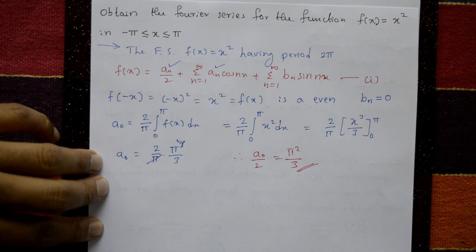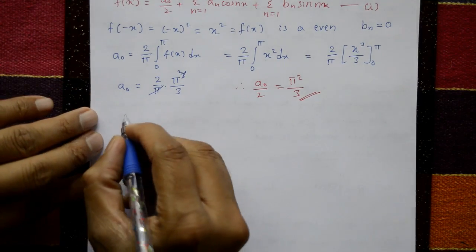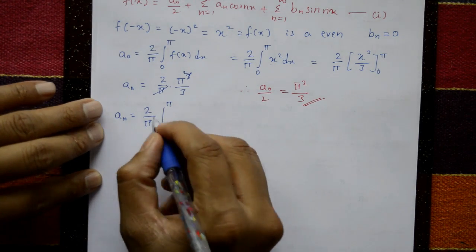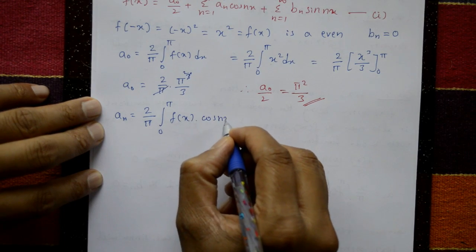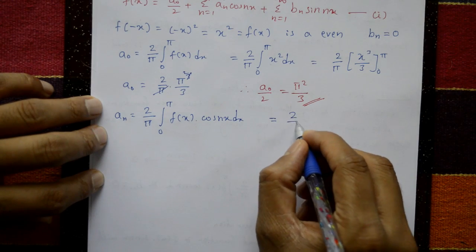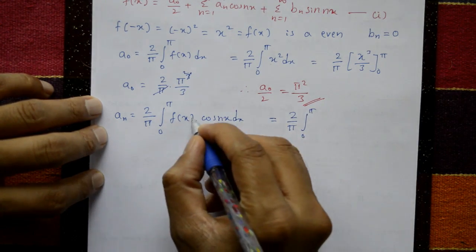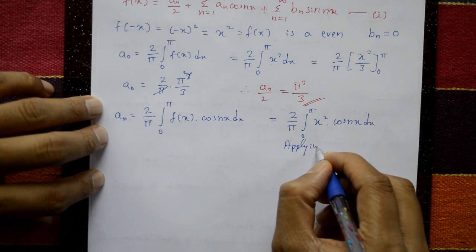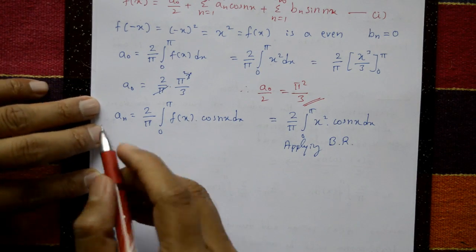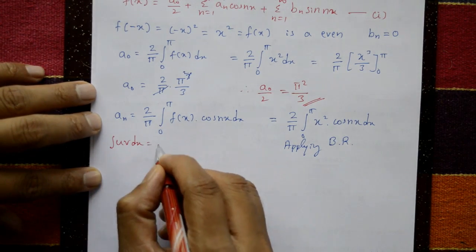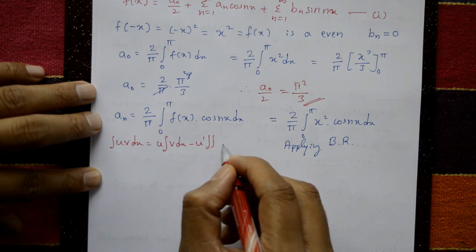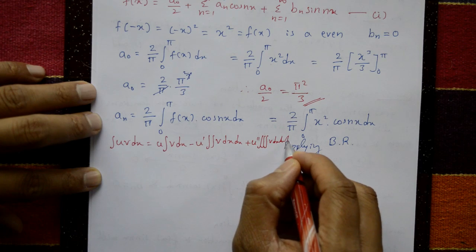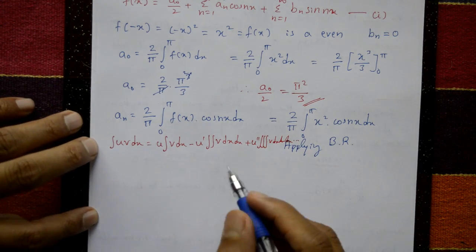For aₙ: aₙ = (2/π) ∫₀^π f(x) cos(nx) dx = (2/π) ∫₀^π x² cos(nx) dx. We apply Bernoulli's rule: u ∫v dx − u' ∫∫v dx + u'' ∫∫∫v dx, and so on. Here u is the polynomial part and v is the trigonometric part.